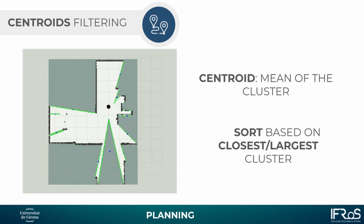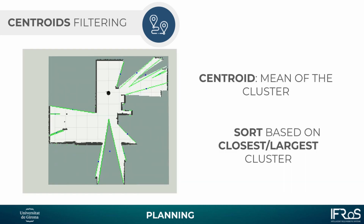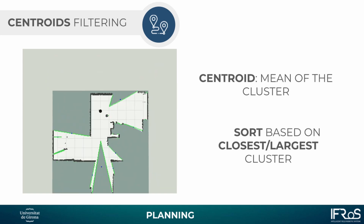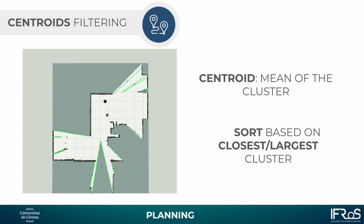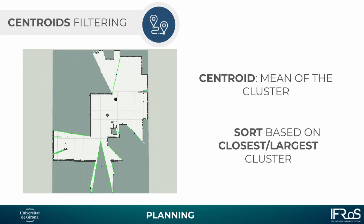The Frontiers is just a list of points clustered together. The centroid is a mean of each cluster, and we are sorting them based on the closest or the largest cluster. You can see in the animation how, while moving the robot, we are updating the Frontiers and the Centroids.